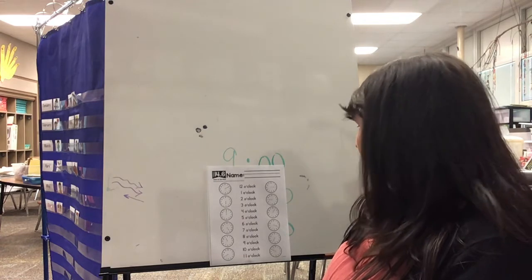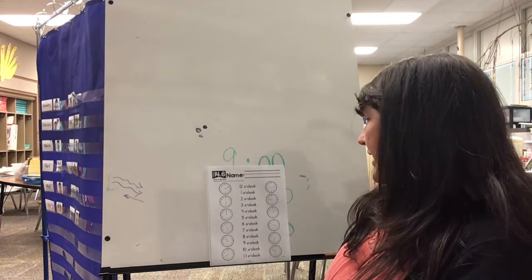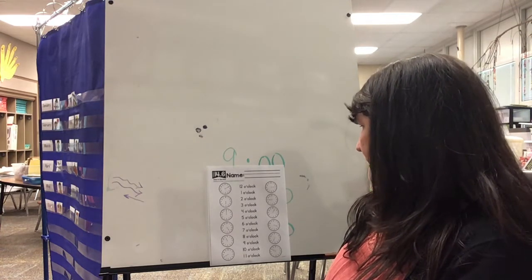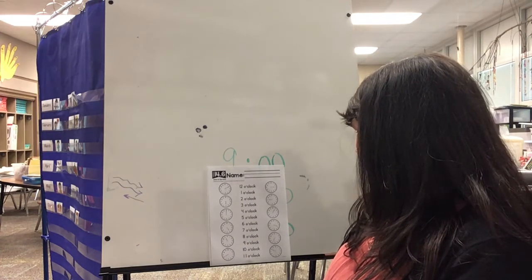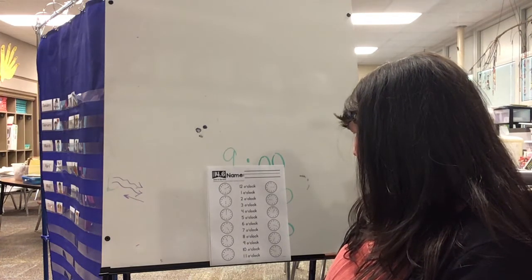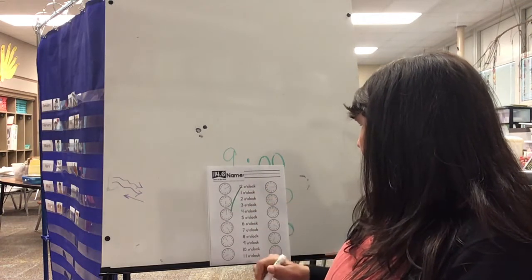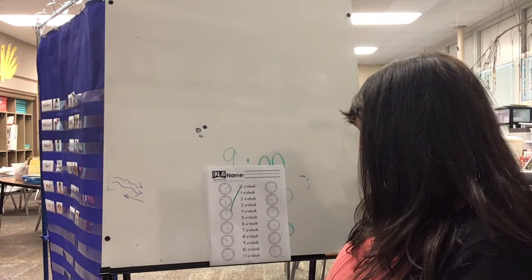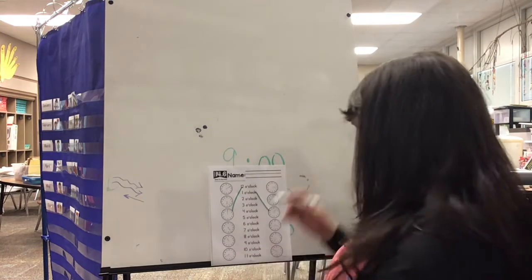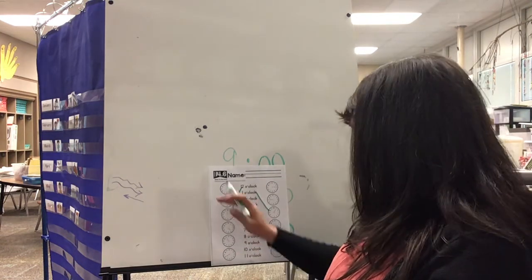Now it does not have the hour hand, it just has the minute hand. So which one is 12 o'clock? This one right here. Now I need to find the one pointing to one o'clock. This one right here. Two o'clock.